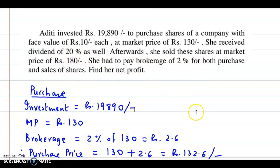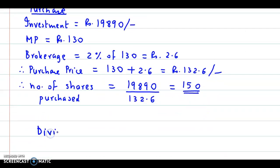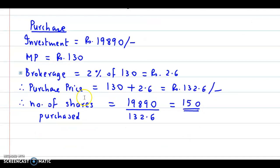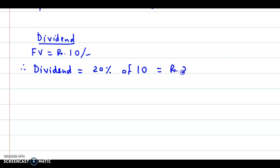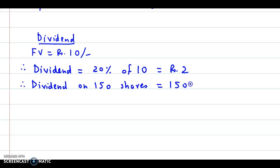Now let us calculate the dividend. She received a dividend of 20 percent. For dividend, we require the face value. The face value of each share is rupees 10 and dividend is 20 percent. So dividend = 20% of face value multiplied by number of shares = 20% of 10 into 150, which gives us rupees 300. So the dividend received is rupees 300.